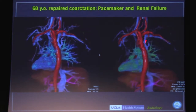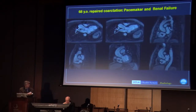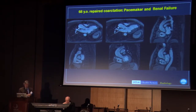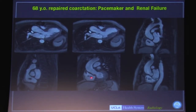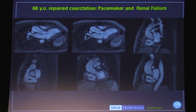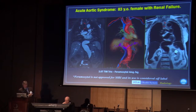Here you can see the residue of the coarctation. As I mentioned, this patient had a pacemaker. Pierangelo mentioned the artifact seen in patients with pacemakers on CINE, but with ferumoxytol — or Feraheme — we can make that go away. Here we can see the leads with almost no artifact and really beautiful definition of the myocardium. Here's an 83-year-old patient who was claustrophobic with an acute aortic syndrome, and we did this study in about 10 minutes with ferumoxytol — she also had renal failure.